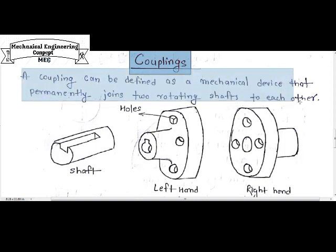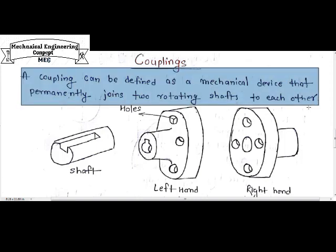A coupling can be defined as a mechanical device that permanently joins two rotating shafts to each other. With this definition, we can understand that a coupling is the mechanical element which is used to connect two shafts.